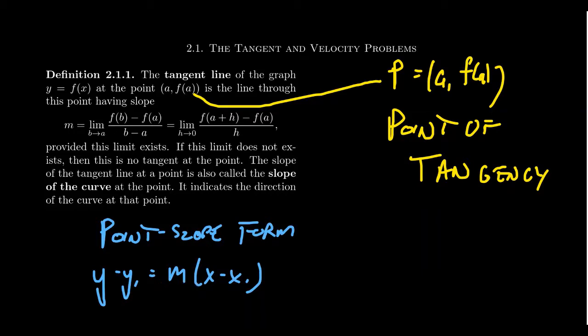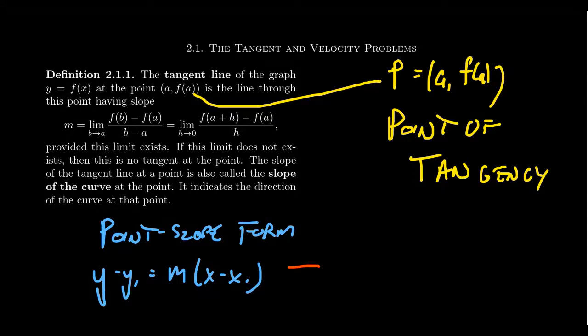We have the point we want for the line, but to finish the equation we need to know the slope — that's the hard part of finding a tangent line. If you have a line in point-slope form it can always be converted to slope-intercept form y equals mx plus b. The slope of the tangent line, which we'll call m, is going to be the limit as b approaches a of f of b minus f of a divided by b minus a.